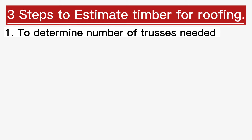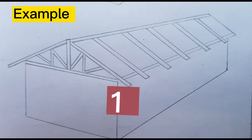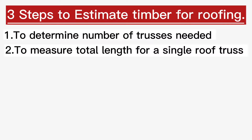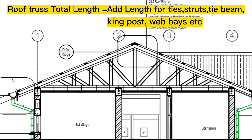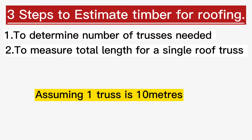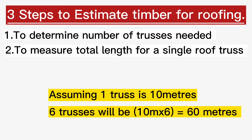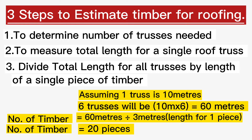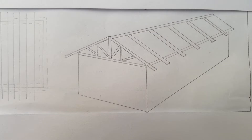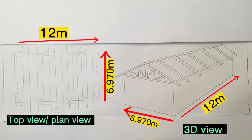In just 3 steps. The first step is to find out how many roof trusses we need for a building. For example, for this gable roof we may need five roof trusses. Step two is to measure the total length of a single roof truss — add up all the members and get the total length, say 10 meters. Multiply those 10 meters by six trusses to get 60 meters. The third step is to divide the total length by the length of a single piece of timber — for example, 60 meters divided by 3 meters gives 20 pieces of timber.